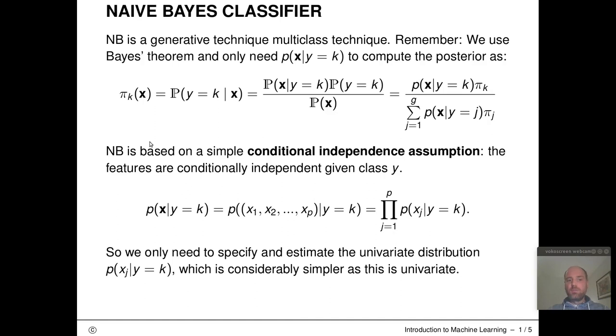For naive Bayes, we make an even stricter simplifying assumption that this class conditional density is actually conditionally independent, or that the features in this class conditional density are actually independent given the class. This means that this multivariate density factorizes into p univariate one-dimensional densities, conditional densities given the class. So the conditional density of feature one, times feature two, times feature three, and so on until feature p.